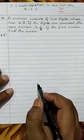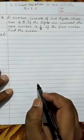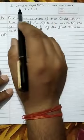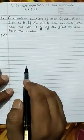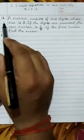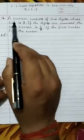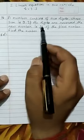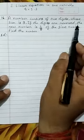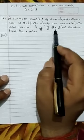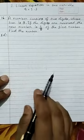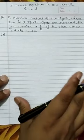Hello students, today we are going to begin with Q16 of Exercise 2.3 on linear equations in one variable. The 16th question states: a number consists of 2 digits whose sum is 9. If the digits are reversed, the new number is 3/8 of the first number. Find the number.